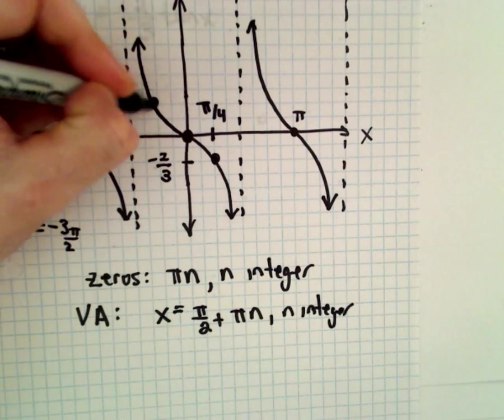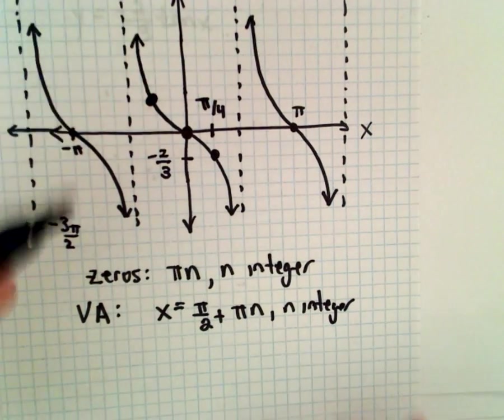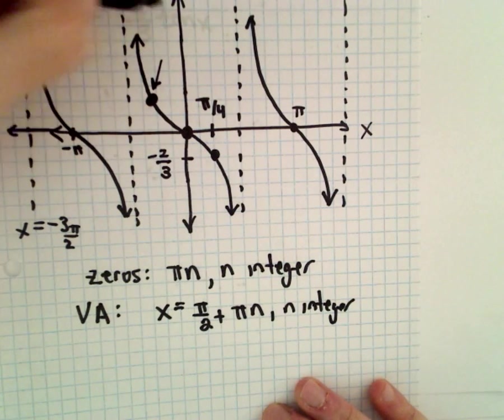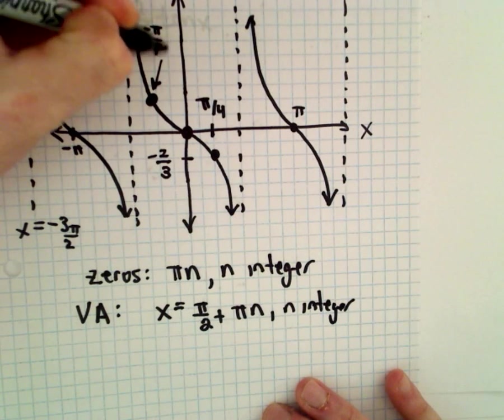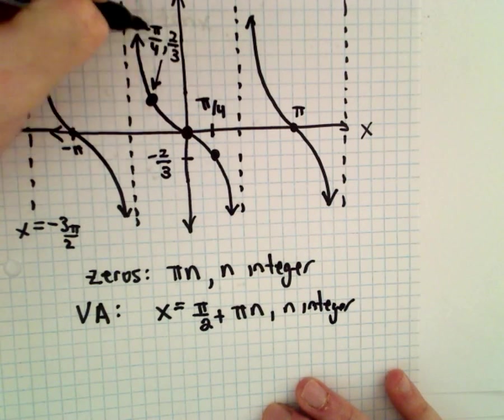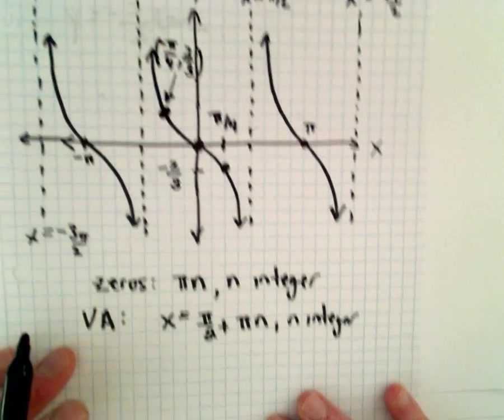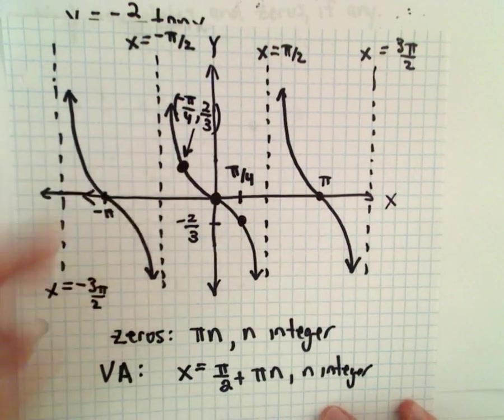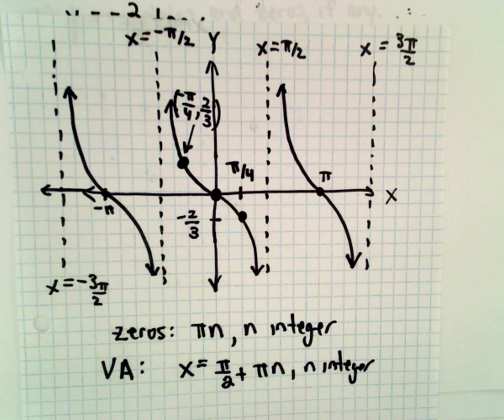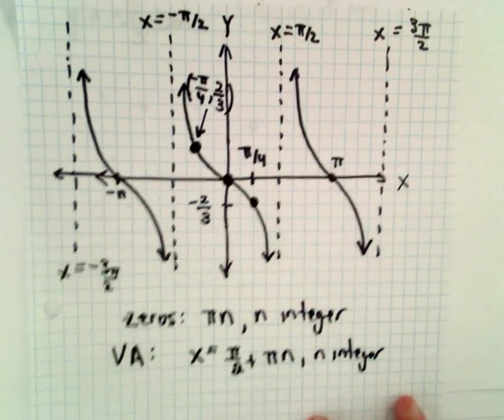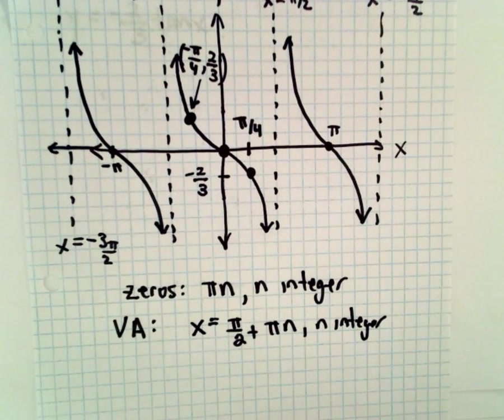And at negative pi over 4, so let's see if I can fit that in there, at negative pi over 4 it would be going through the point positive 2 thirds. So likewise, negative pi over 4 comma 2 thirds would be a point on the graph, and this just keeps repeating forever and ever.